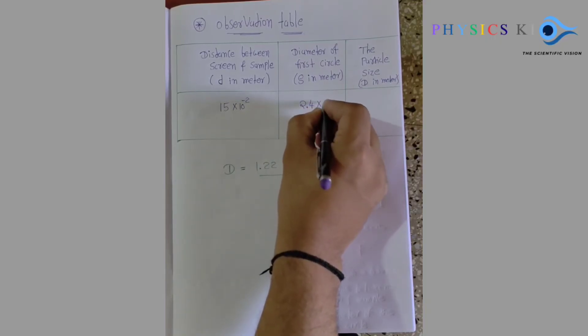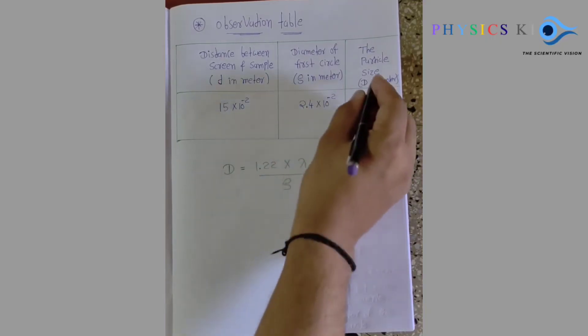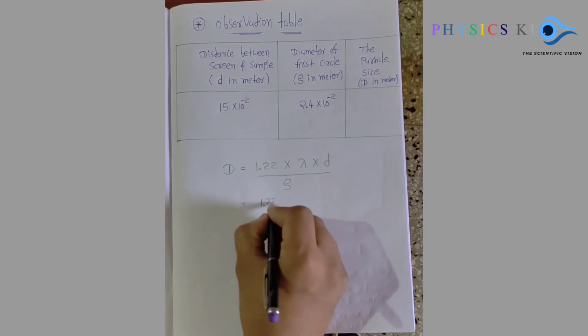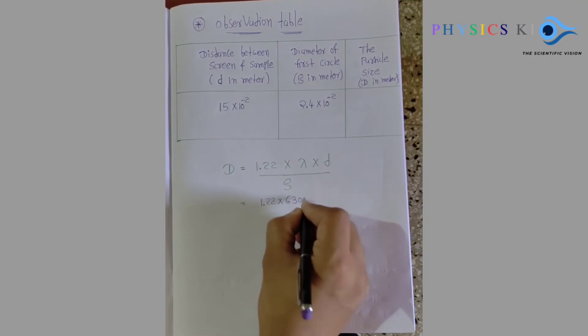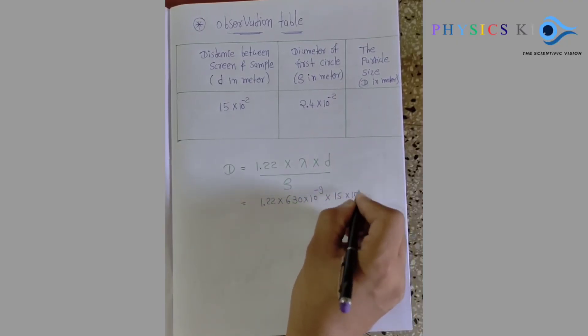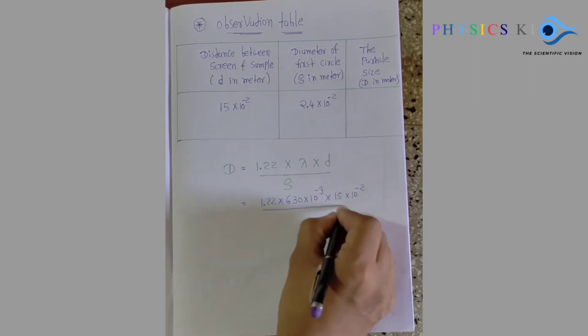And diameter is 2.4 into 10 to the power minus 2 meter. So using the formula, just put the value: 1.22 lambda - it means 630 into 10 to the power minus 9 nanometer because of red laser. D is already 15.